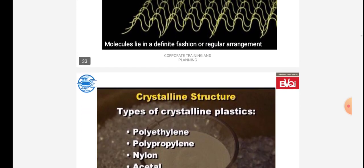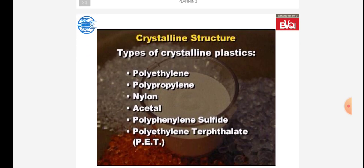Types of crystalline plastics include: polyethylene, polypropylene, nylon, acetal, polyphenylene sulfide, and polyethylene terephthalate.